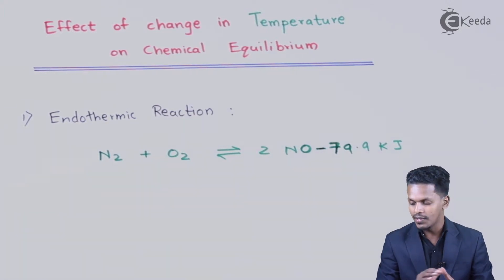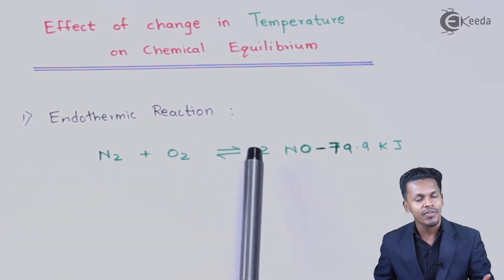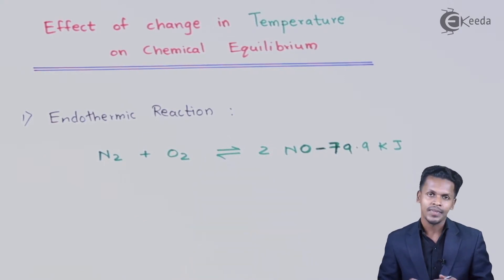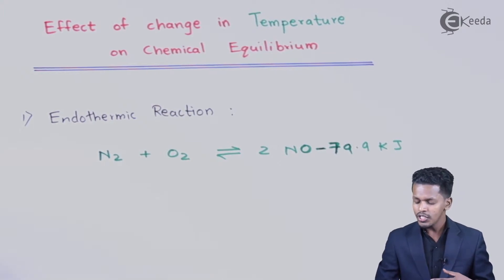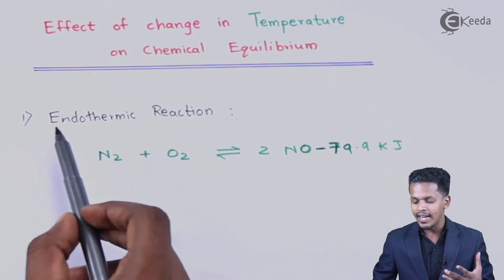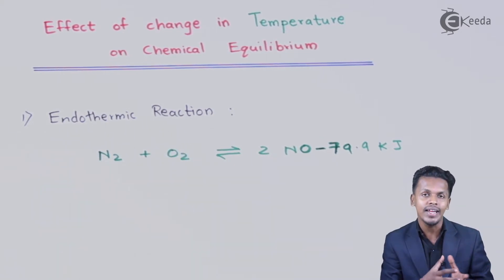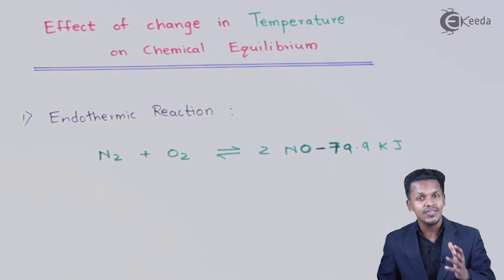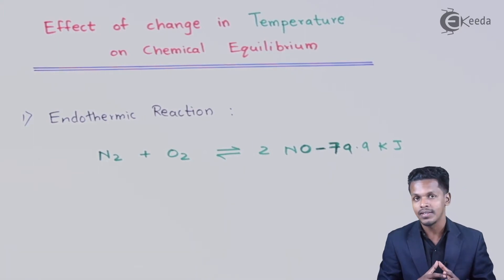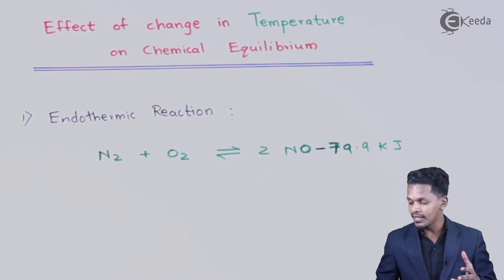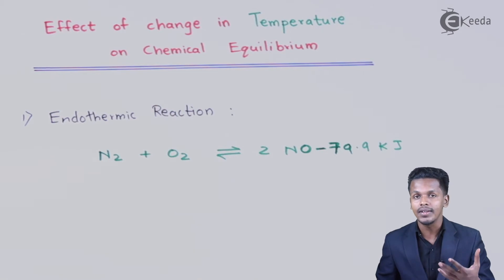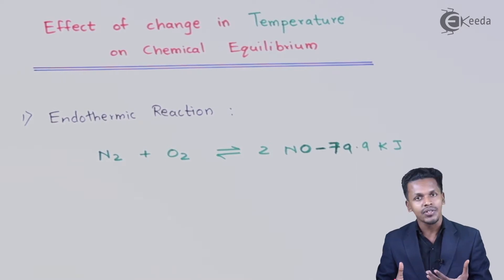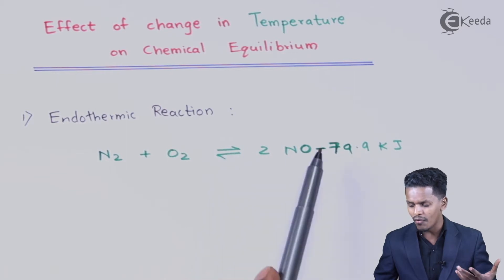Now, how does temperature change this situation — will it give us a forward or backward reaction? This reaction is exhibiting chemical equilibrium. If we increase the temperature, since the reaction is endothermic, the heat provided is absorbed by the reacting mixture. This will favor the reaction to move in the forward direction, and we get a forward reaction.